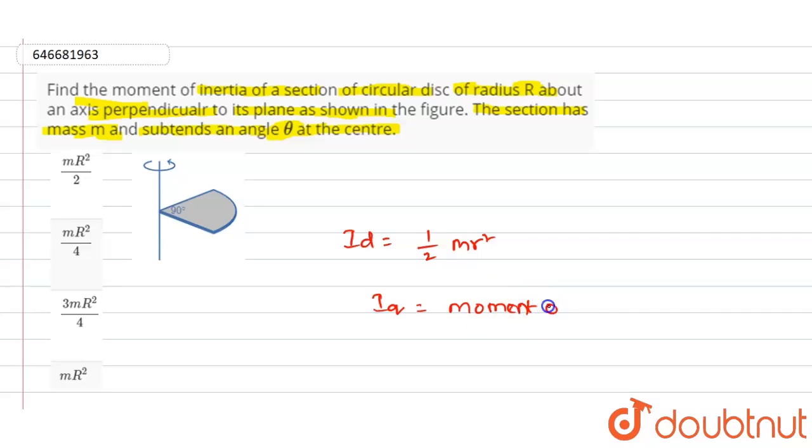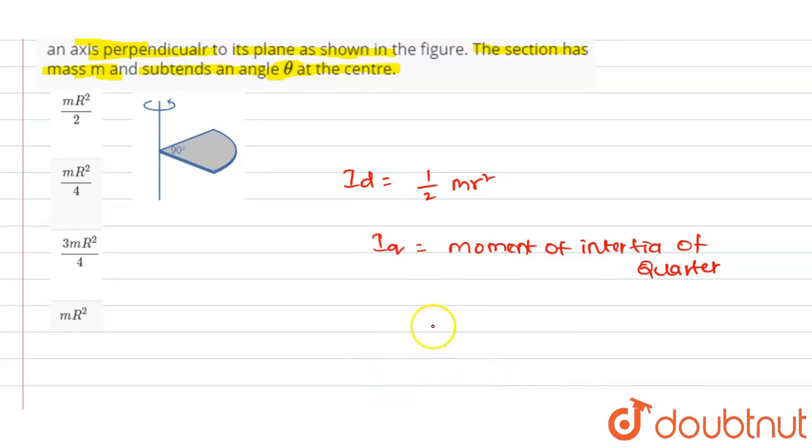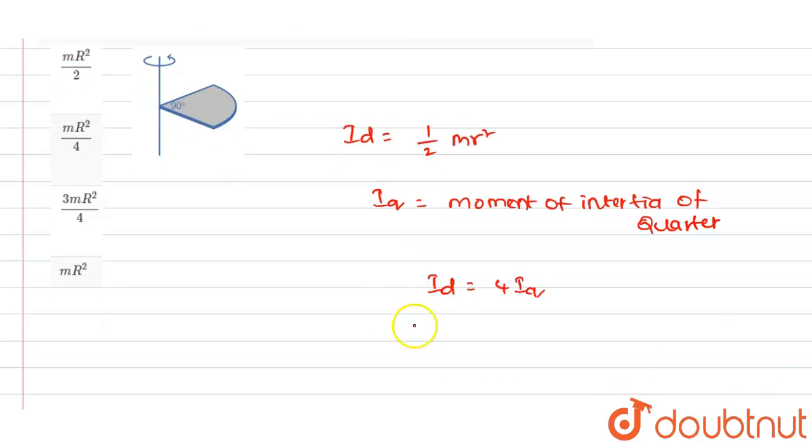So according to that, by symmetry we will write Id value will be equal to 4 into Iq. And the value of Iq is equal to 1 divided by 8 mr squared.